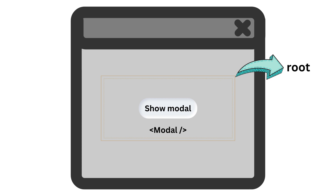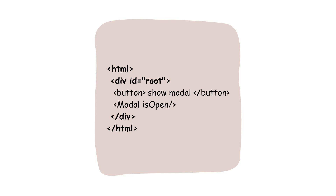Here you can see in this diagram, one web page is getting rendered and this yellow boundary is actually one container inside which any React application is getting rendered. Now in this root container I have two components: one is Show Modal Button. Here you see the HTML format of the previous diagram — the root container is this div where the id is root, and under this container I have two components: button and modal.